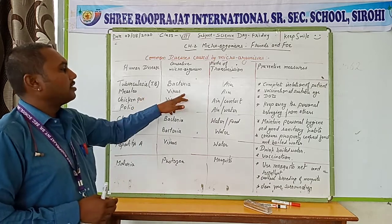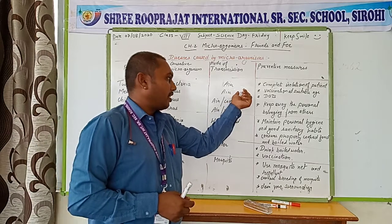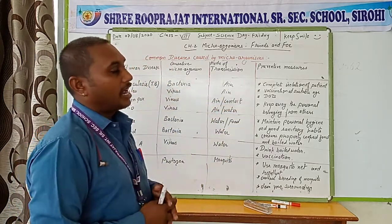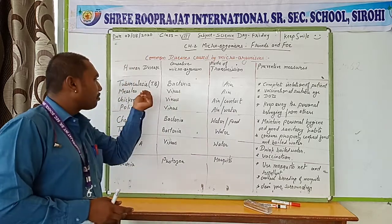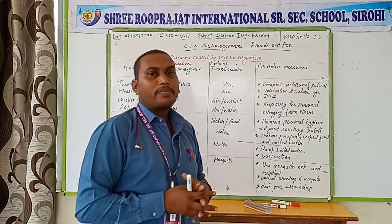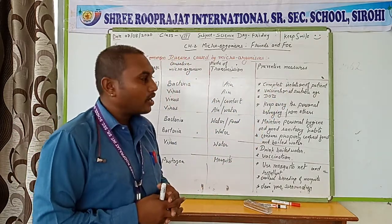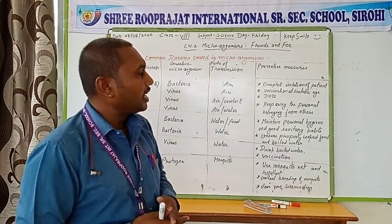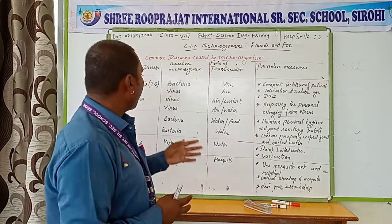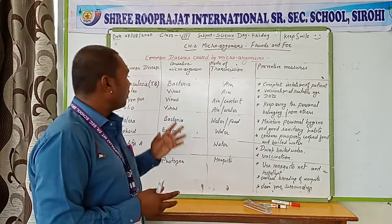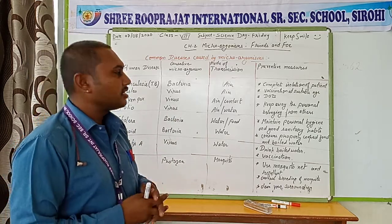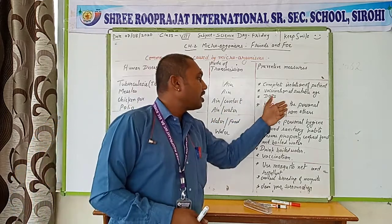Measles is caused by a virus transmitted through air. In the preventive measures, we need complete isolation of the patient. Vaccination should be given at a suitable age — BCG vaccination is available in children to protect them from measles, tuberculosis, and polio diseases. Chicken pox vaccines are also present.